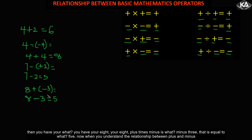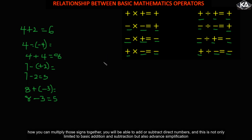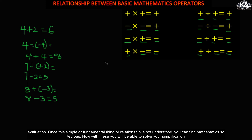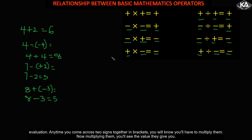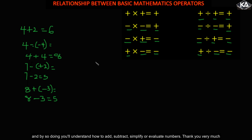Now when you understand the relationship between plus and minus and how you can multiply those signs together, you'll be able to add or subtract direct numbers. This is not only limited to basic additions and subtractions but also advanced simplification and evaluation. Once this fundamental relationship is understood, mathematics won't seem so tedious. Anytime you come across two signs together, multiply them to find their value, and by so doing you understand how to add, subtract, simplify, or evaluate numbers. Thank you very much.